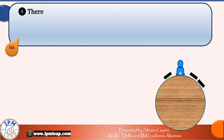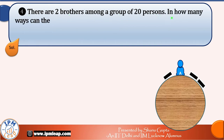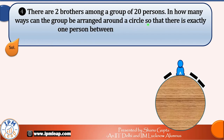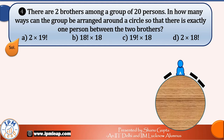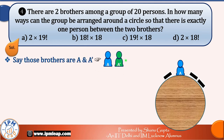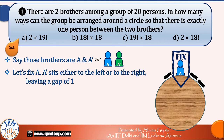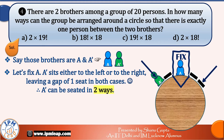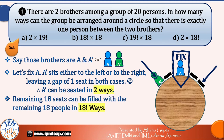Fourth question: there are two brothers among a group of 20 persons. In how many ways can the group be arranged around the circular table so that there is exactly one person between the two brothers? Suppose the brothers are A and A′. Fix A. A′ sits either to the left or right leaving a gap of one seat in both cases, so A′ can be seated in 2 ways. With A and A′ already seated, the remaining 18 seats can be filled with the remaining 18 people in 18! ways. By the fundamental rule of counting, total arrangements = 2×18! ways. Option D is the correct answer.